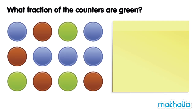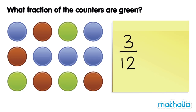What fraction of the counters are green? There are one, two, three green counters, and there are twelve counters altogether. We can write the fraction of green counters as three over twelve, or three twelfths. We can simplify three twelfths to one quarter. So we can say one quarter of the counters are green.